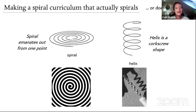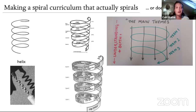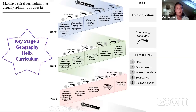I think we've been calling this the wrong thing all along. A spiral emanates out from one point, whereas a helix is a corkscrew shape — and all the examples I've looked at are helix-shaped. With themes and concepts threaded through, you couldn't do that with a spiral; you need that helix shape. So I'm going to call it a helix curriculum instead.